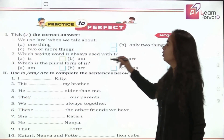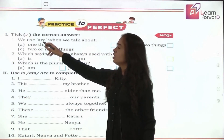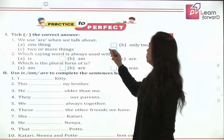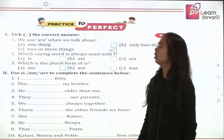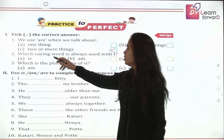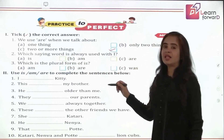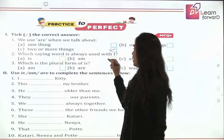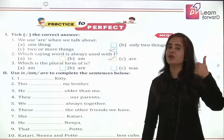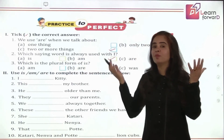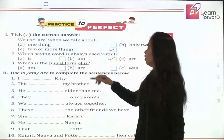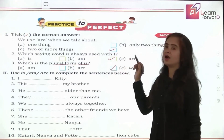Let us do an exercise now. We use 'are' when we talk about plural — that means two or more things. When we talk about one thing, we use 'is'. Which helping verb is always used with 'I'? Yes — 'am'. Which is the plural form of 'is'? For singular we use 'is', but for plural we use 'are'. So the plural form of 'is' is 'are'.